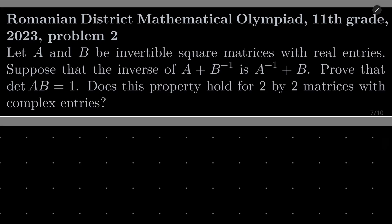Hello friends. In this video I'd like to solve the following problem from the Romanian District Mathematical Olympiad, 11th grade, 2023, problem number 2 from linear algebra. Let a and b be invertible square matrices with real entries. Suppose that the inverse of (a + b) inverse of this matrix is a to the power minus 1 plus b. Prove that the determinant of a times b equals 1. And the second part: does this property hold for 2 by 2 matrices but with complex entries?